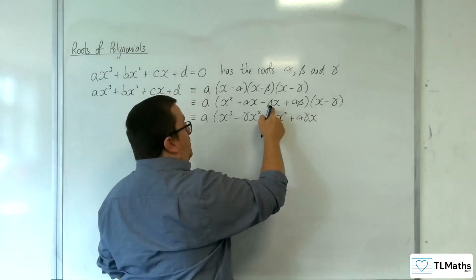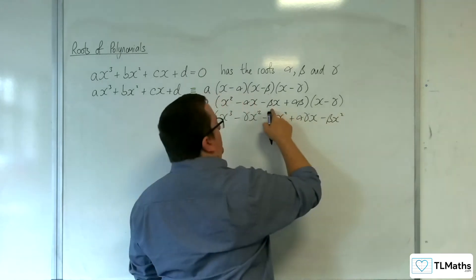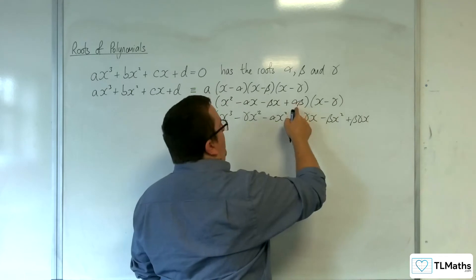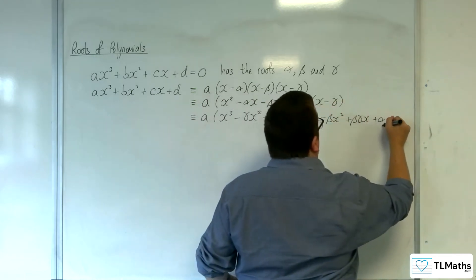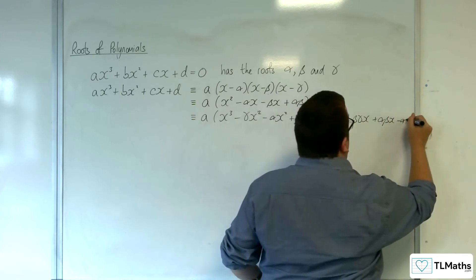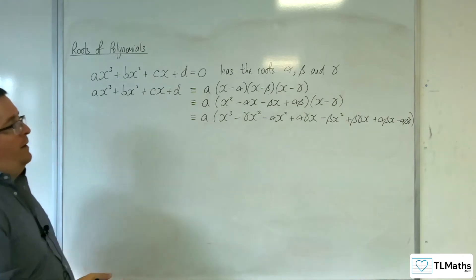We've got -βx times x, so -βx². And -βx times -γ, so +βγx. Then we've got αβ times x, and αβ times -γ, so -αβγ. Just about managed to get it on the line.